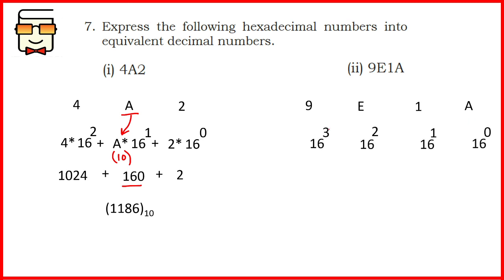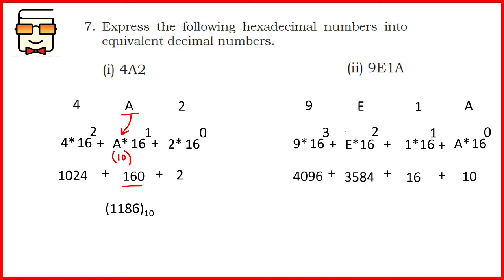For the second part, 9E1A: multiply each digit by 16 to the power 3, 2, 1, and 0 respectively. A is 10, and E is 14. Multiplying and adding the corresponding values together gives the final answer as 7706 in decimal.